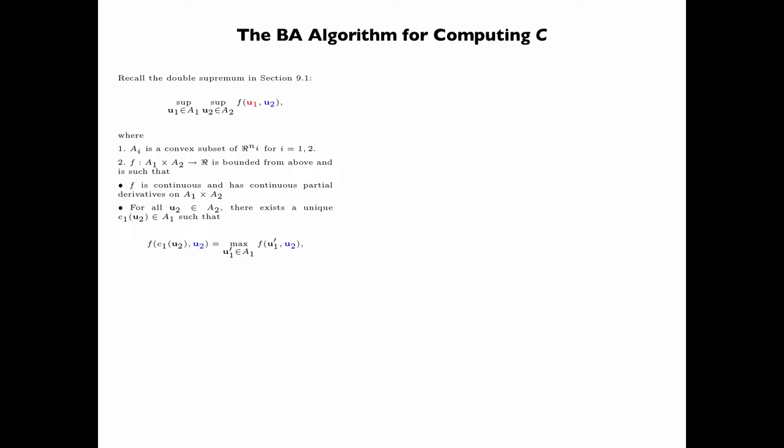For all U2 in A2, there exists a unique U1 in A1 that maximizes F. And for all U1 in A1, there exists a unique U2 in A2 that maximizes F.